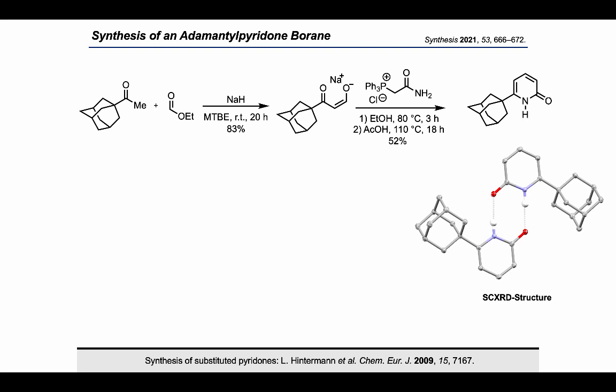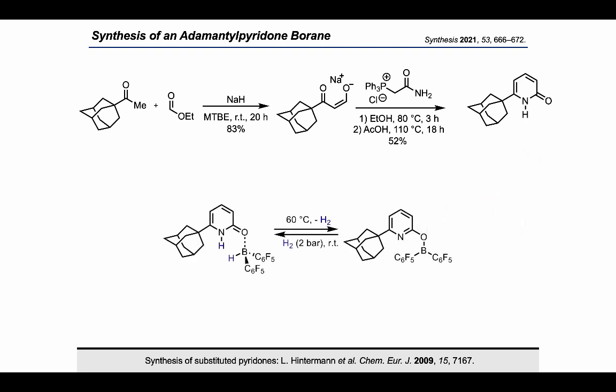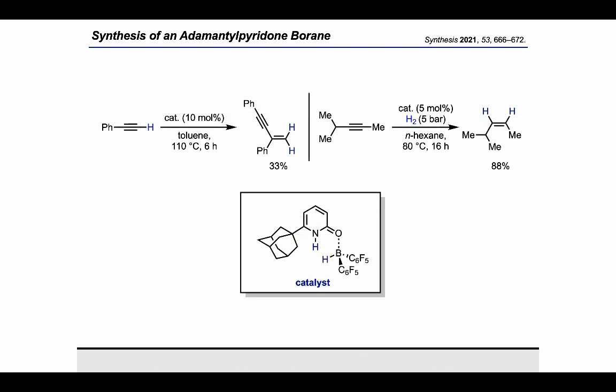The molecular structure of 6-adamantylpyridone, derived from X-ray analysis, shows that it forms a dimer in the solid state. The pyridone-borane complex, derived from 6-adamantylpyridone and Piers borane, is able to activate dihydrogen. Furthermore, this complex was successfully applied as catalyst for the gem-dimerization of terminal alkynes and the semihydrogenation of internal alkynes.